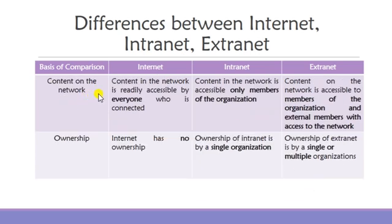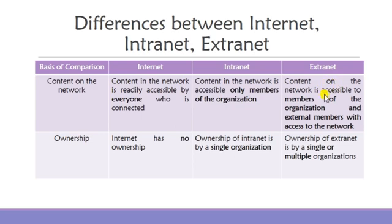Based on content: for the internet, content in the network is readily accessible by everyone who is connected to it. For intranet, content is accessible to only authorized members of the organization — you can be a member and still not be authorized to access the network. For extranet, content on the network is accessible to both internal members and external members who are authorized to access it.